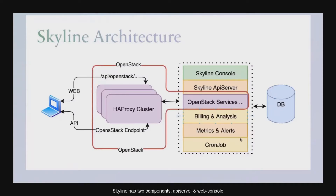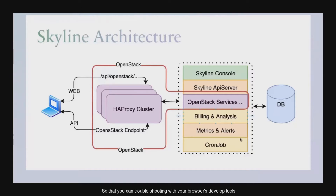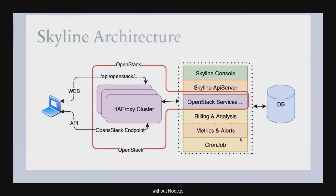Skyline has two components: API server and web console. The API server is like the Horizon API, however much more simple. We pass through most APIs to OpenStack endpoints directly, rather than adding an adaptation layer, so that you can troubleshoot with your browser's developer tools, which makes debugging much easier. The Skyline web console is a pure front-end framework, without Node.js. We keep Skyline simple and stupid — less is more.